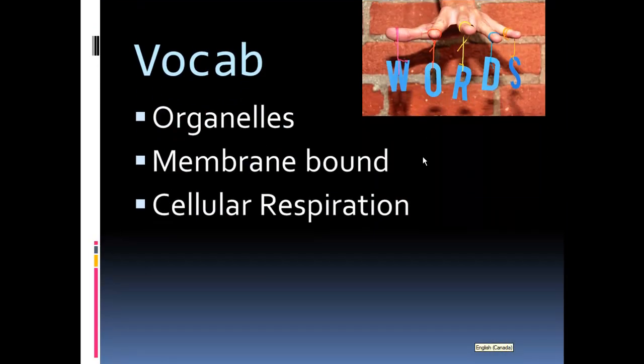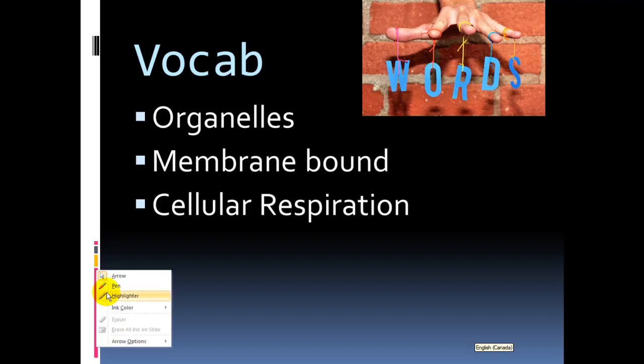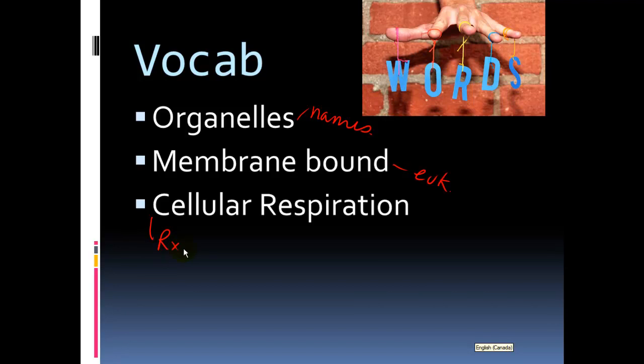Some vocabulary: organelles - look at the list of organelles, the names that we need to know. The idea of an organelle being membrane-bound - remember that eukaryotic cells, us, animal cells, have membrane-bound organelles. Eukaryotes are defined by that. The other big idea in terms of vocabulary is the chemical reaction. We need to be able to write out, either in words or chemical formula, the reaction for cellular respiration.